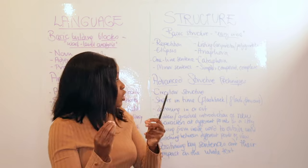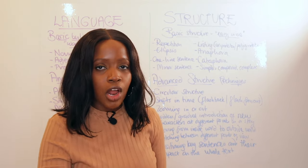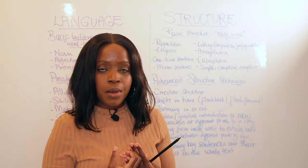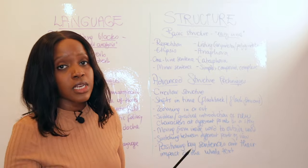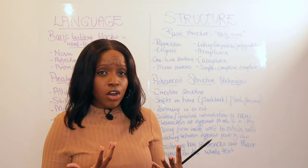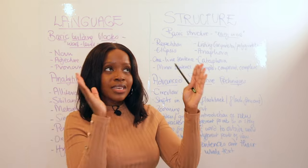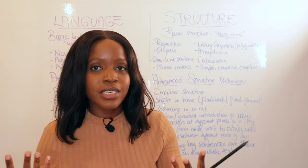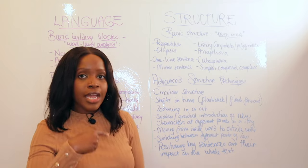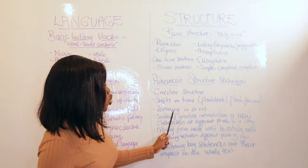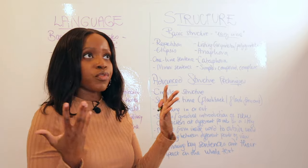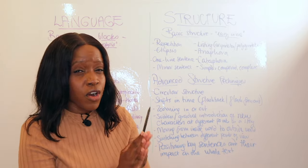Now the slightly more advanced structural techniques that exam boards love. Circular structure is when an extract starts and ends at the same point — a great example is An Inspector Calls, which begins and ends with an inspector coming to question a family. Shifts in time include flashbacks or flash-forwards. Zooming in or out means focusing on one character or detail, then panning out to the wider environment.